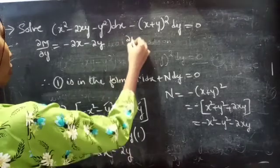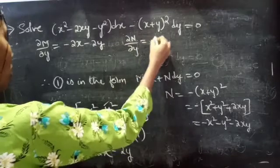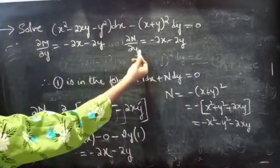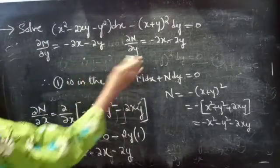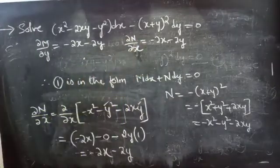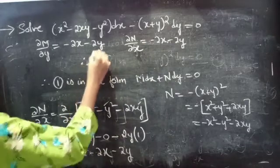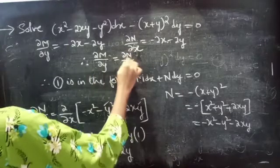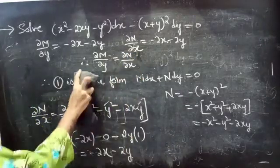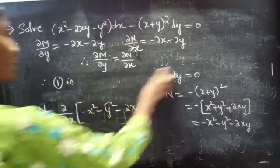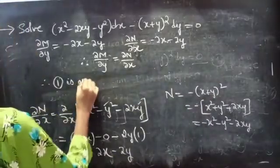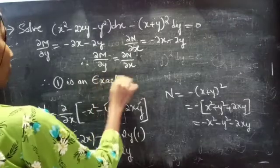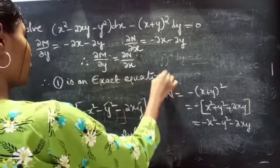We got ∂N/∂x equals minus 2x minus 2y. Therefore ∂M/∂y equals ∂N/∂x, so equation 1 is an exact equation.